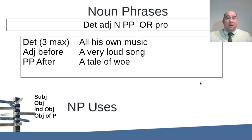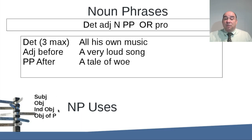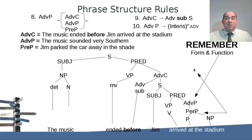A noun phrase is going to be broken down into determiner, adjective, noun, and prepositional phrase. Here's an example: 'All his own music' — a noun with three determiners (the maximum is three). You can have an adjective before the noun: 'a very loud noise' — 'very loud' describes 'noise.' You can also have a prepositional phrase after the noun: 'a tale of woe' — 'of woe' is a prepositional phrase acting as an adjective. Noun phrases can function as a subject, object, indirect object, direct object, or object of a preposition.